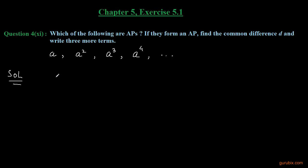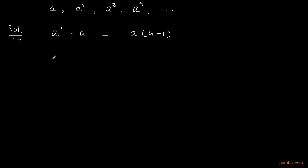We have to subtract the first term from the second one. The second term is a² and the first term is a. Taking a common from these two terms, we get a(a − 1). Now we subtract the second term from the third term. The third term is a³, so we subtract a² from it. Taking a² common from these two terms, it remains a²(a − 1).